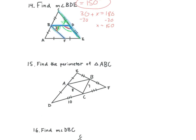Number 15. Find the perimeter of triangle ABC. What do we need to find the perimeter? We need to add all the sides. We have AC and CB — all we need is AB. DF is going to be twice as long as AB. What's the measure of DF? 20. So then what's AB? 10. What do we get for the perimeter of ABC? 25.